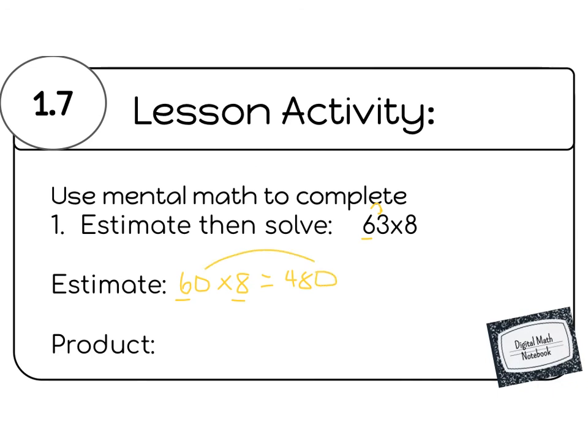Then I can use my math fact of 6 times 8 equals 48, and then a zero jumps on the end, giving us 480. In order to find the actual product, you'll write it like this: 63 times 8, and you'll solve to find the answer. Your answers need to be typed into your digital math notebook.